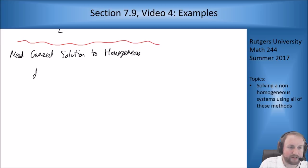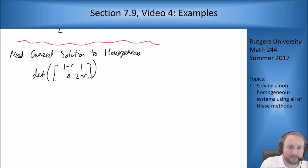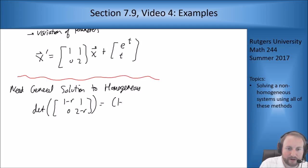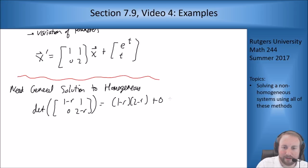We're looking at the determinant of [1−r, 1; 0, 2−r], because our matrix is [1,1; 0,2]. This gives (1−r)(2−r) + 0, since 1 times 0 is 0. So this tells me that I have eigenvalues at r = 1 and r = 2.